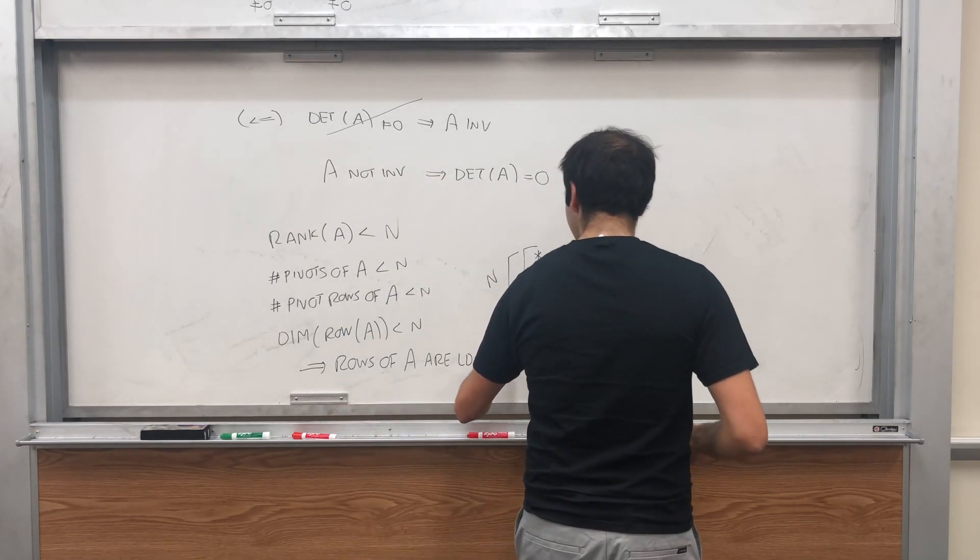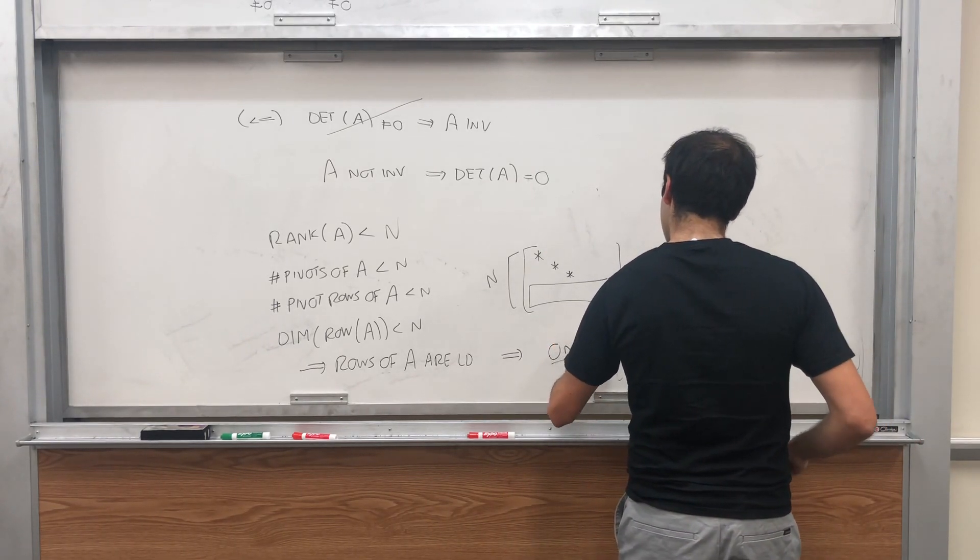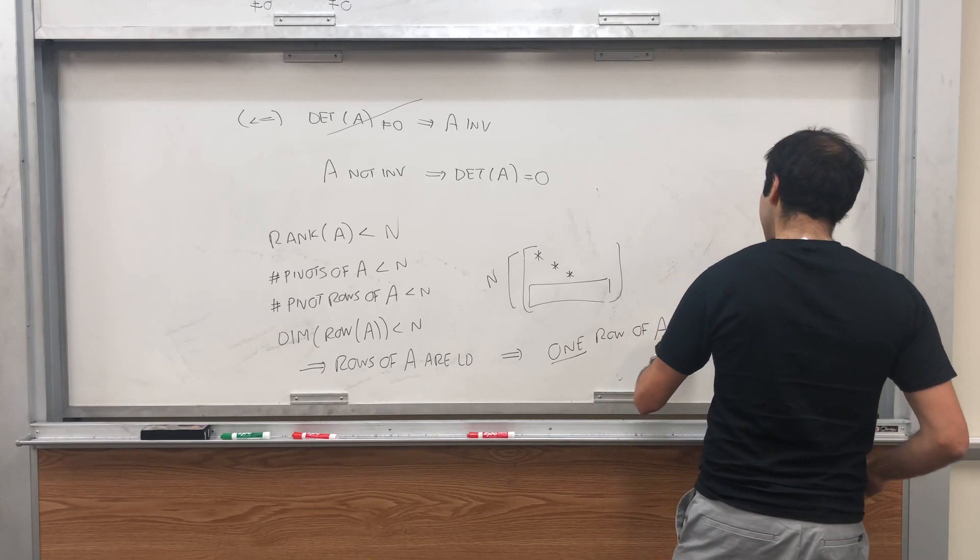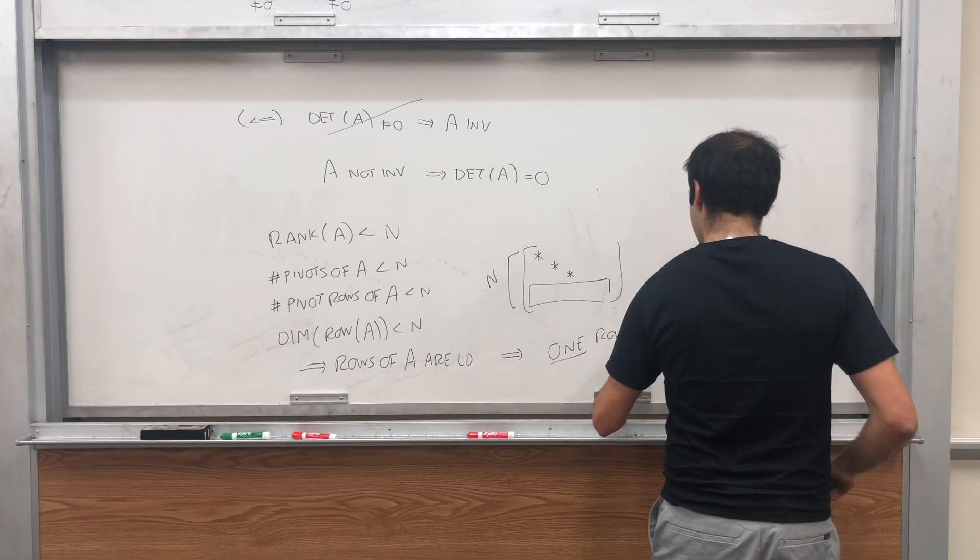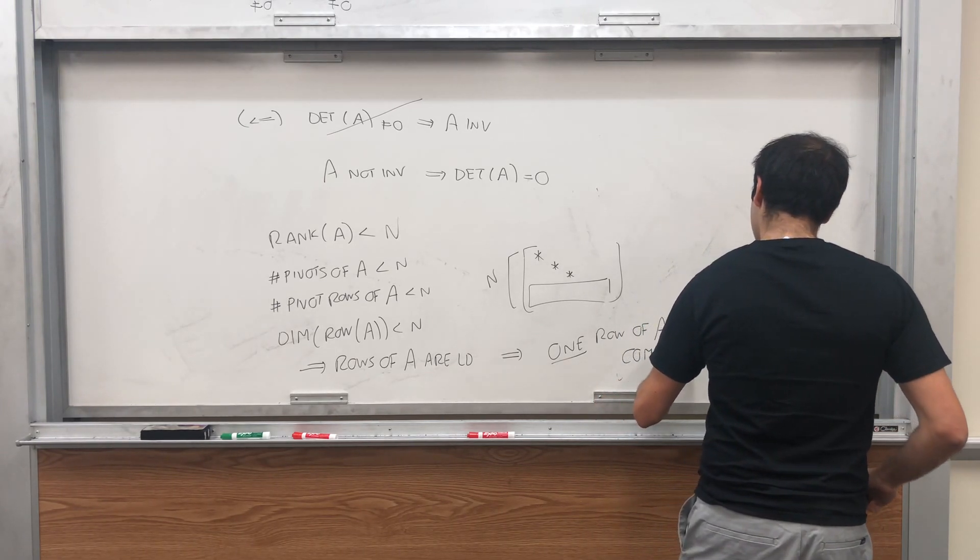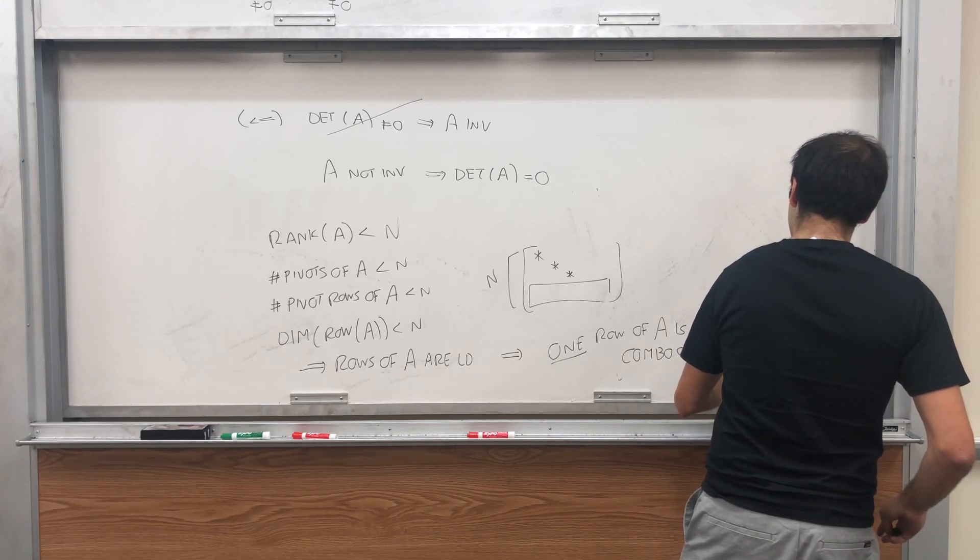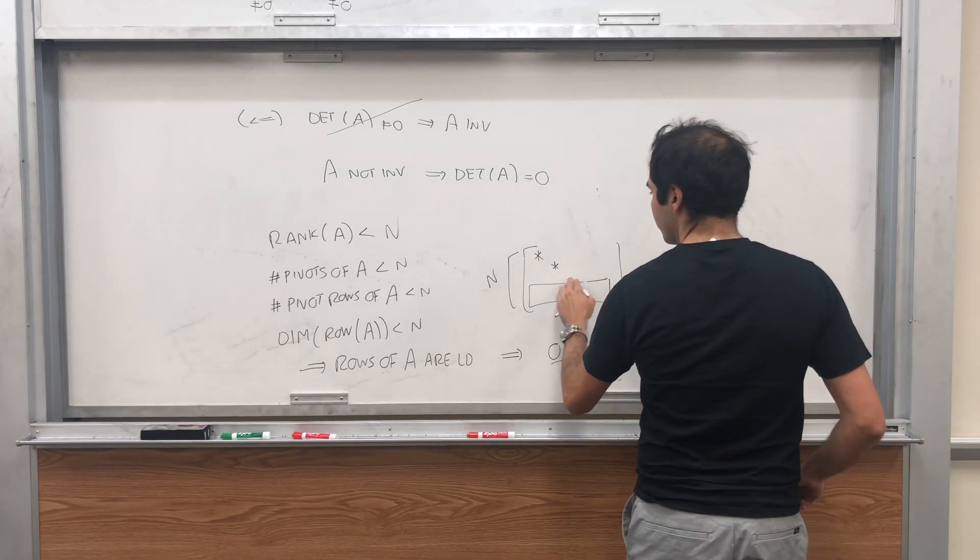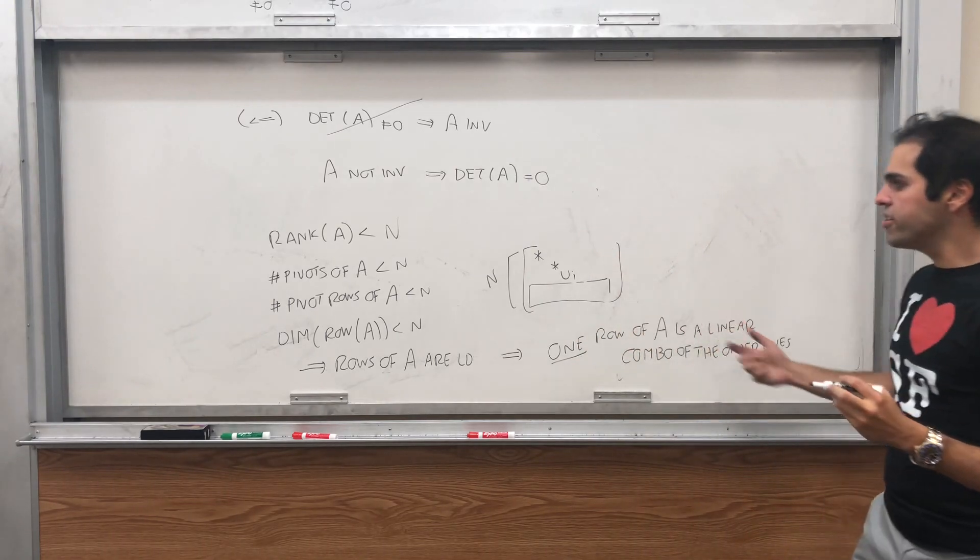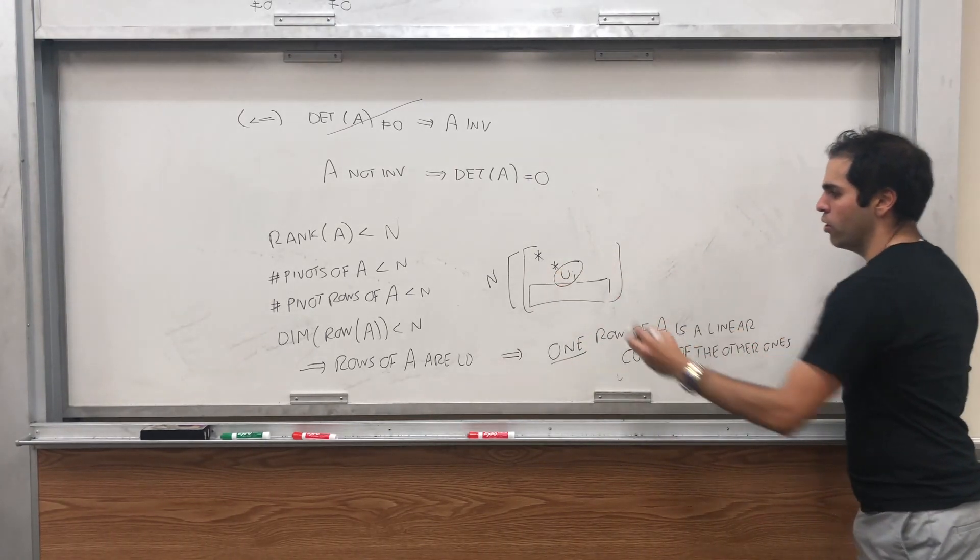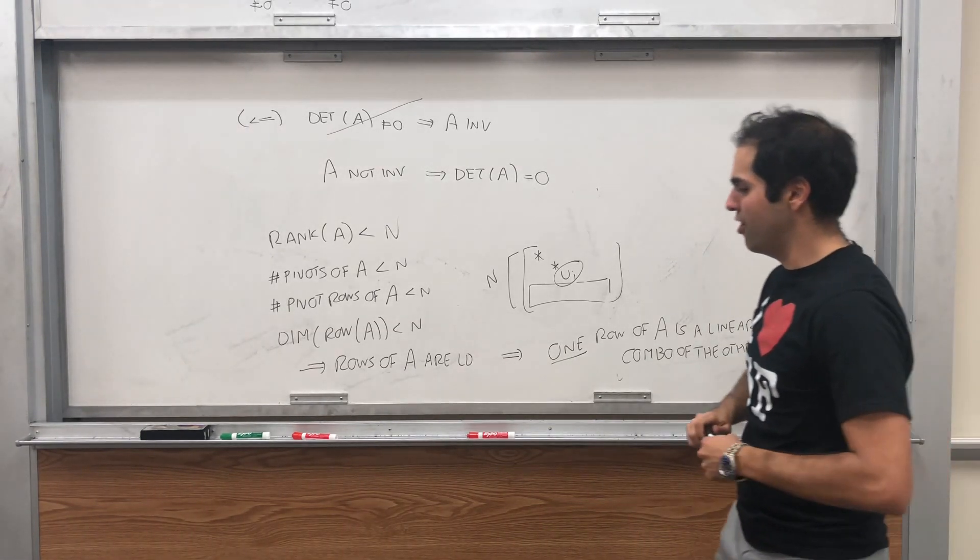So what this means is that the rows of A are linearly dependent. And in particular, what this means is one row of A is a linear combo of the other ones. So for example, you have some row, I don't know, Ui, which is a linear combo of the other rows. And by the way, not necessarily the last one. This does not necessarily follow.